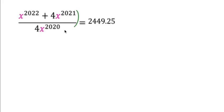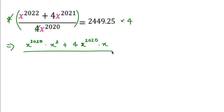To find it, first I will multiply both sides by 4. Then the 4s get cancelled here, and we can write x^2022 as x^2020 times x^2, plus 4 times x^2021, which we can write as x^2020 times x.